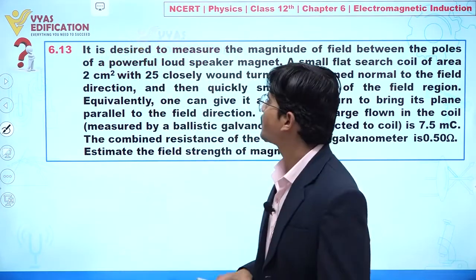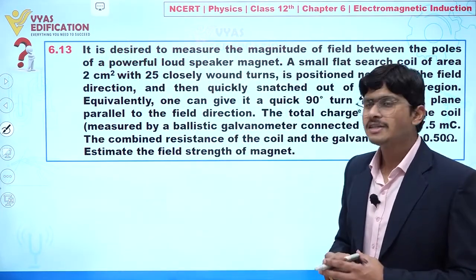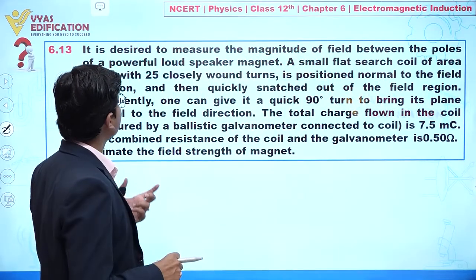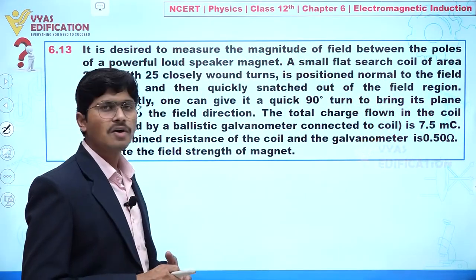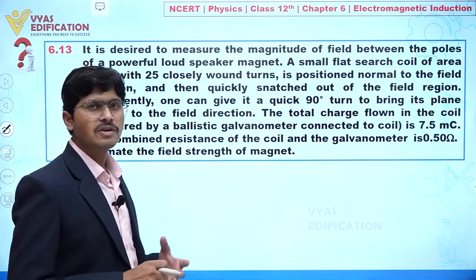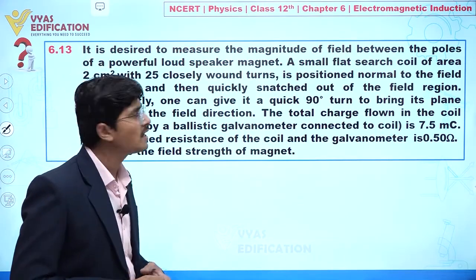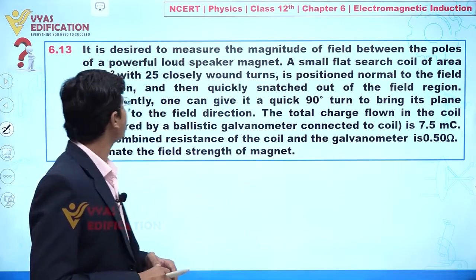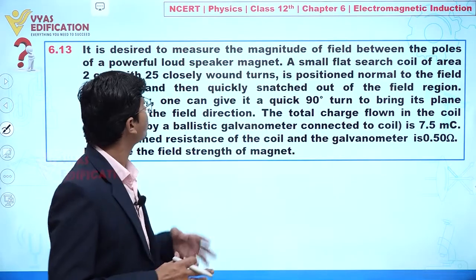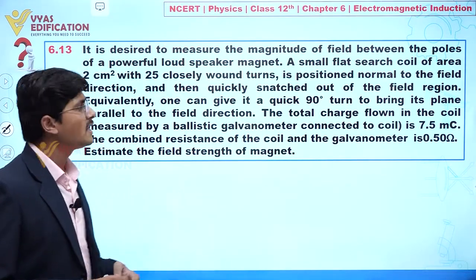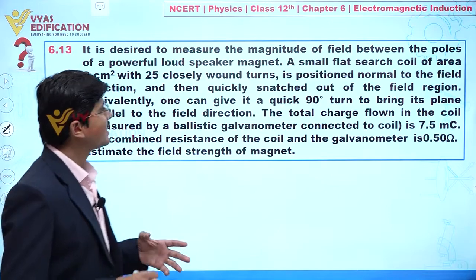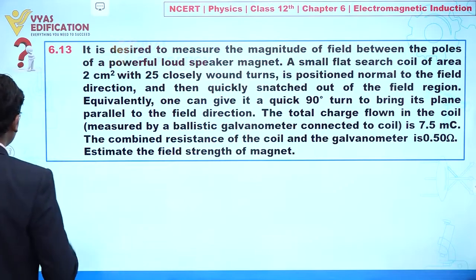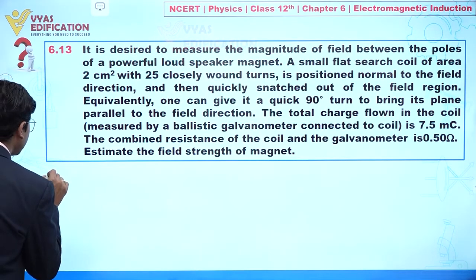We are going to discuss question number 6.13. In this question, it is desired to measure the magnitude of field between the poles of a powerful loudspeaker magnet. A small flat search coil of area 2 centimeter square with 25 closely wound turns is positioned normal to the field direction. Let us try to understand this given situation.